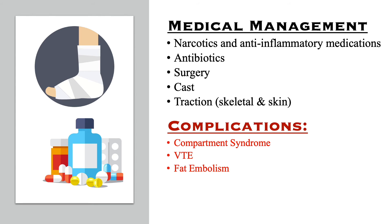To immobilize the extremity, casts or traction are used. In traction, weights and force are used to reduce the fracture and relieve muscle spasms. In skeletal traction, pins, screws, and wires are secured to the bone surgically and weight is applied to achieve realignment. In skin traction, a flexible boot or belt is used to maintain the extremity.